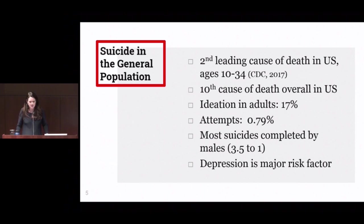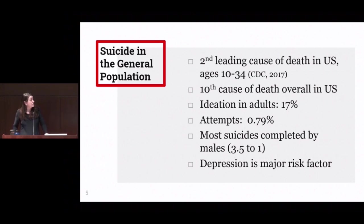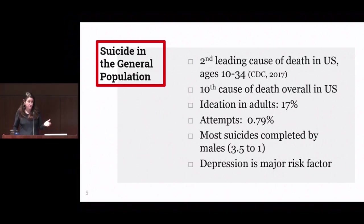We'll talk about major risk factors for suicidality in autism spectrum conditions and then talk about some ideas to support people who have autism spectrum conditions — things they themselves as a community can do, and also what the rest of the world can do to help mitigate suicidal ideation and behaviors. In the general population, suicide is the second leading cause of death in the United States for youth and young adults, ages 10 to 34, and the tenth cause of death overall.